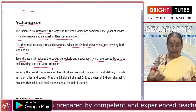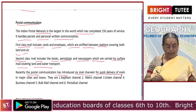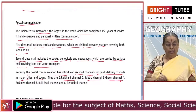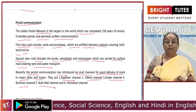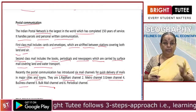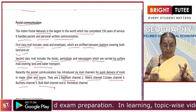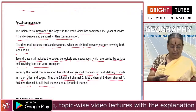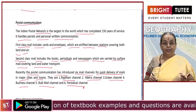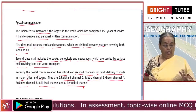Very recently, postal communication has introduced six mail channels for quick delivery of mails in major towns and cities. They are: Rajdhani channel, metro channel, green channel, business channel, bulk mail channel — which handles heavy items like invitation cards, learning and study materials sent in large numbers — and then business channel is mainly for business magazines. Then we have the periodical channel, which handles registered periodicals that are weekly, monthly or fortnightly, sent from one place to another.